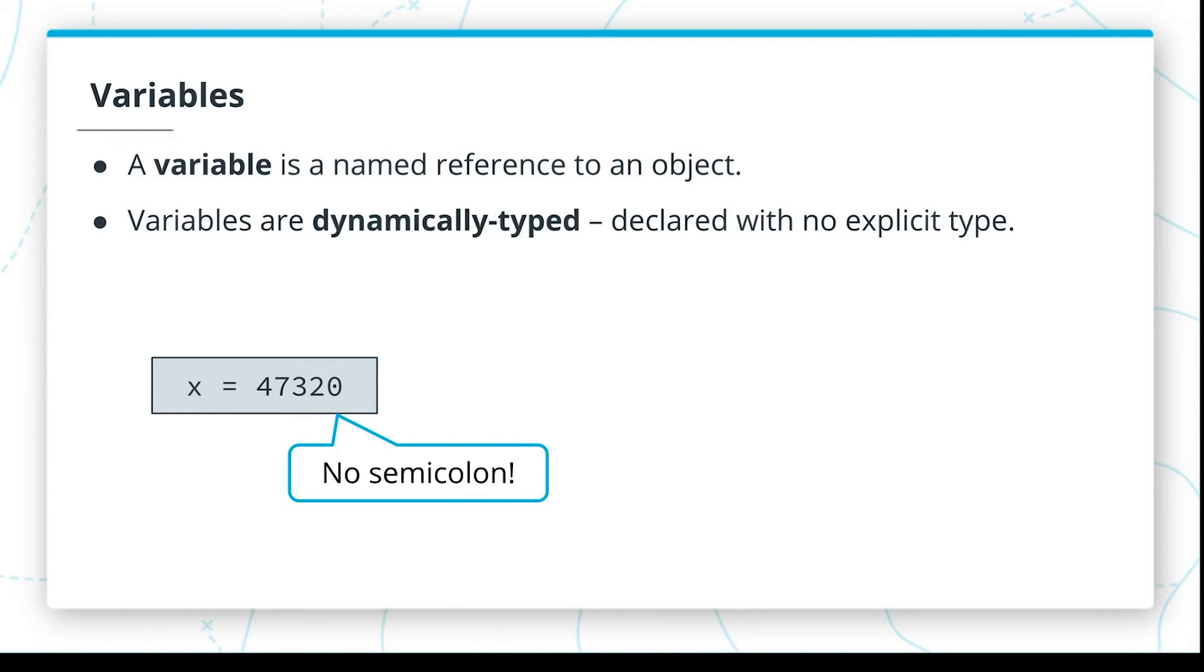And variables in Python are dynamically typed. That means that they're declared without an explicit type. So even though we just learned that objects have and know about a type, variables do not. Variables are little more than a reference to a Python object.